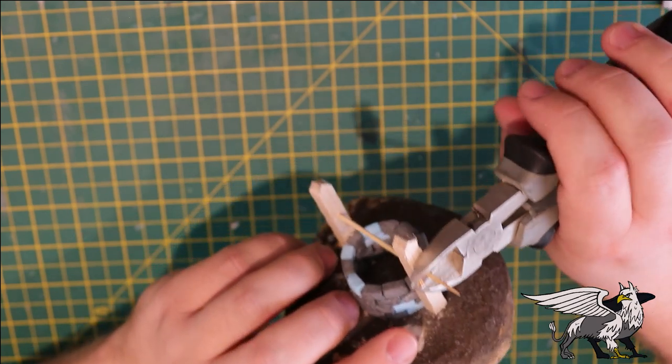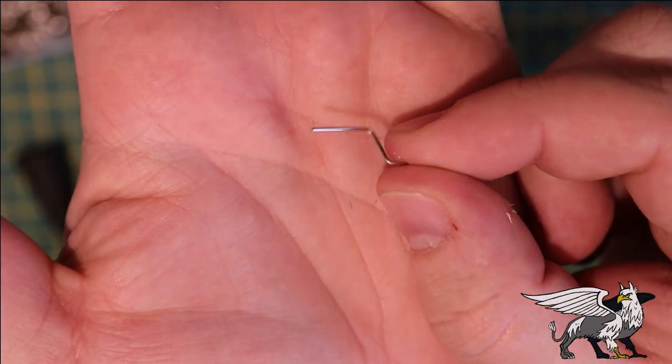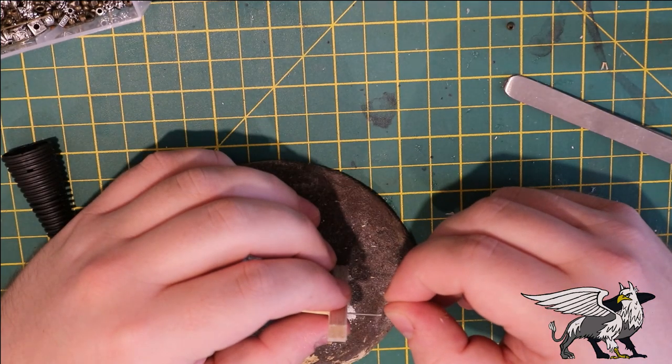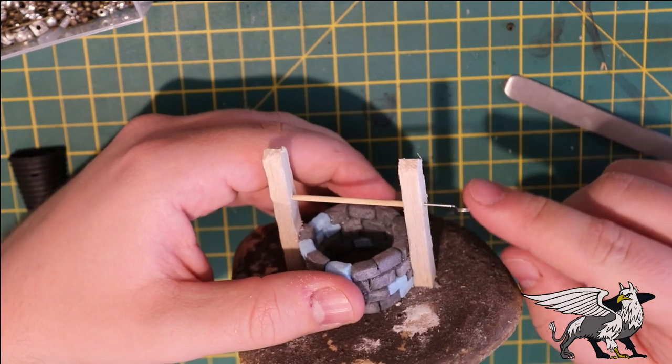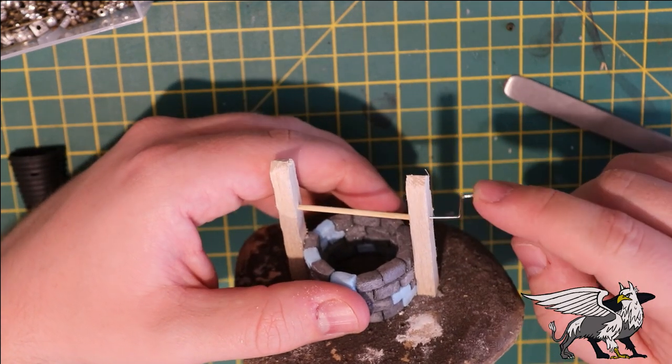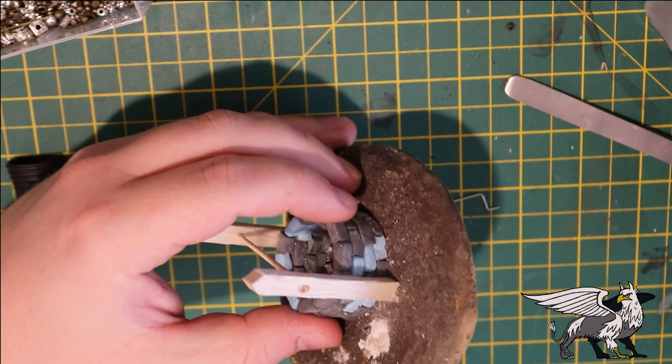And just clip the ends off and tidy them up. Now for a winding handle, I'm using a piece of paper clip and I just bent that into an S shape, two right angles, just using some needle nose pliers, and that's going to sit in the wood with some super glue.